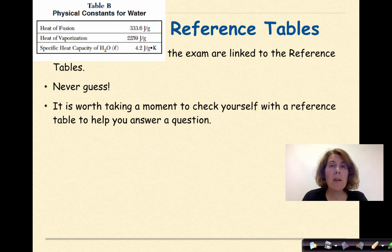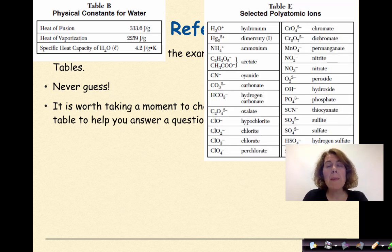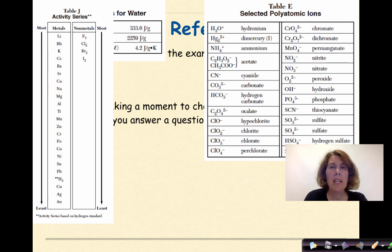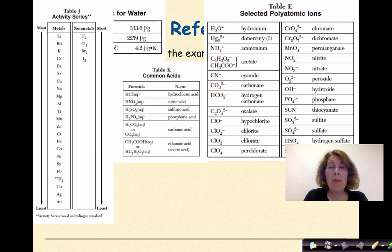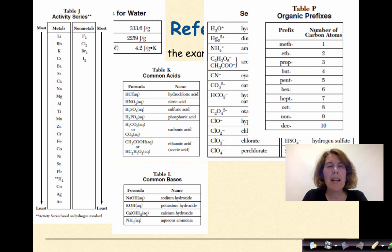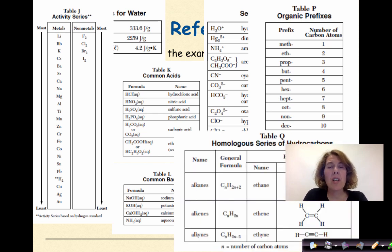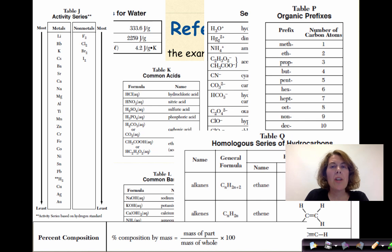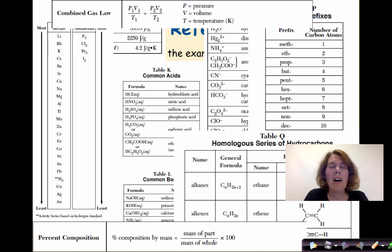So you might need to know the specific heat capacity of water, that's found on table B. Or, maybe you need to tell the difference between sulfate and sulfite, that's on table E. Maybe you need to figure out whether a redox reaction is spontaneous or not, or predict the products of a single replacement reaction, that's on table J. How about knowing some names of common acids, that's on table K. Or table L, which will give you the common bases. Maybe you need to figure out how to name an organic compound, make sure you go to table P. Or, differentiating between an alkene, alkane, or alkyne, that's totally table Q. Or, figuring out the percent composition of an element. You're going to go to table T, and that will give you percent composition by mass, the formula for that. And finally, maybe you need the combined gas law, and you need to differentiate between pressure, volume, and temperature, knowing that temperature is always going to be given in Kelvin. All of these and more are listed in your reference tables. Use them.